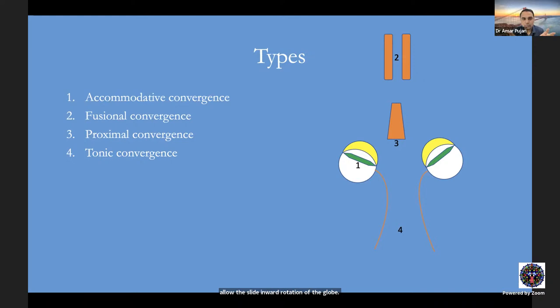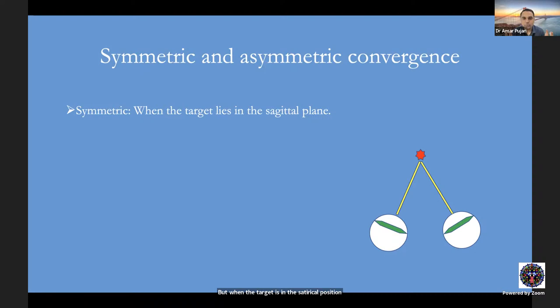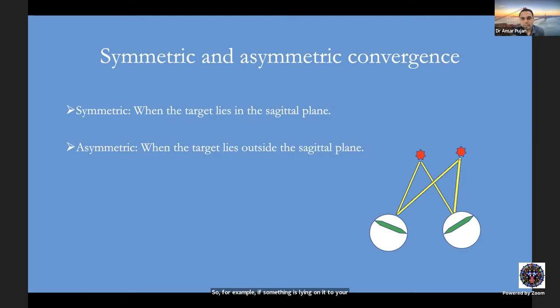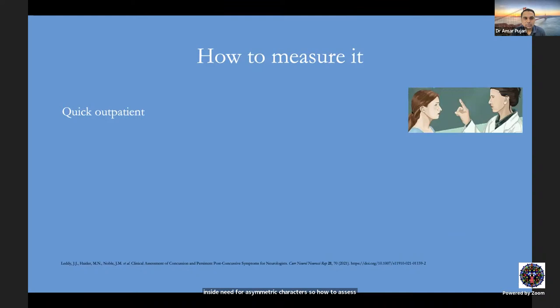Regarding symmetric versus asymmetric convergence: when a target is straight ahead along the sagittal plane (cyclopean direction), innervation to both medial recti is equal — that is symmetric convergence. When the target is off to one side, the innervation to the near-side medial rectus is less than to the far-side medial rectus — that is asymmetric convergence. Understanding when each applies is important.